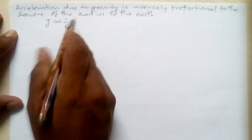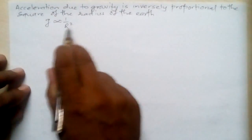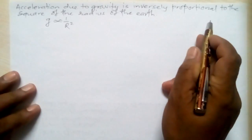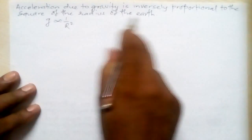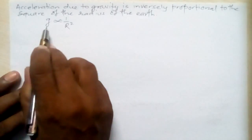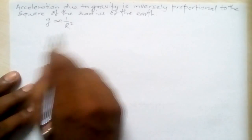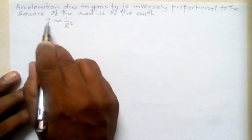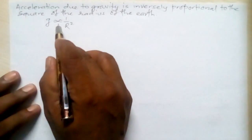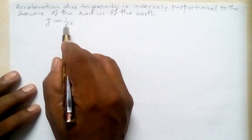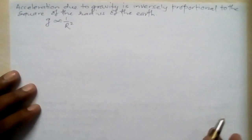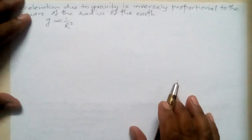This is a fact that acceleration due to gravity is inversely proportional to the square of the radius of the earth. Mathematically, it can be written as: acceleration due to gravity, denoted by small g, is inversely proportional to the square of the radius of the earth r, where r is the radius of the earth.